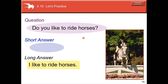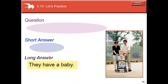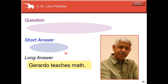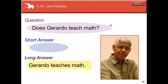'Do they have a baby?' Short answer: 'Yes, they do.' For Gerardo — he is third person singular, so use 'does': 'Does Gerardo teach math?' Remember to remove -es from 'teaches' — the verb goes back to base form. Short answer: 'Yes, he does.' 'Do cows bark? No, they don't.'